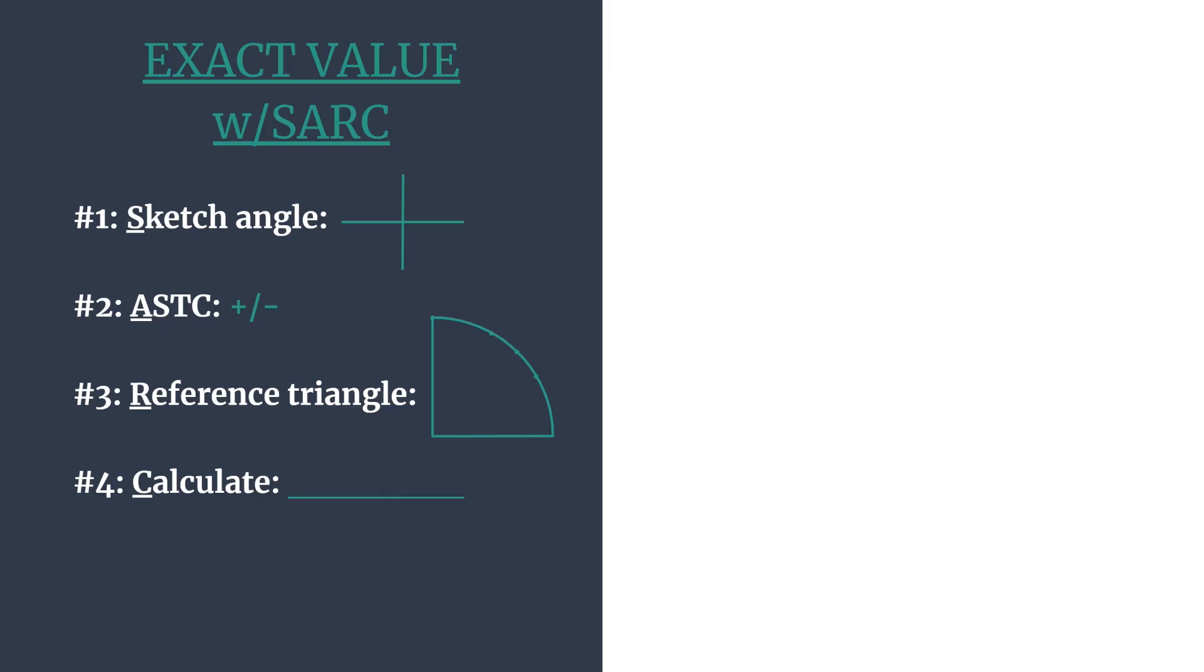R stands for reference triangle. We'll find the reference angle, the special right triangle that goes with it, and the coordinates. And then C stands for calculate. We'll calculate the trig ratio for secant of 225.